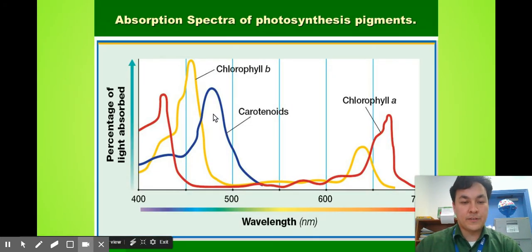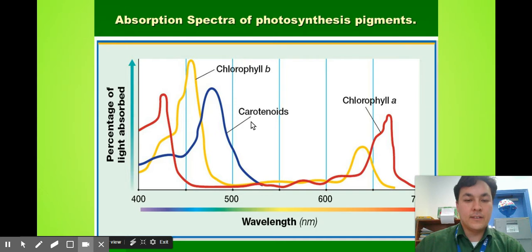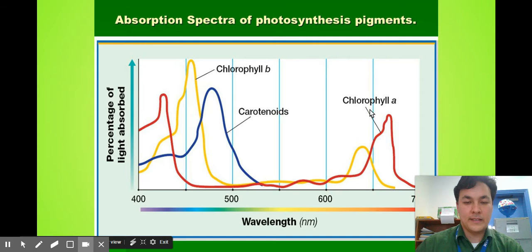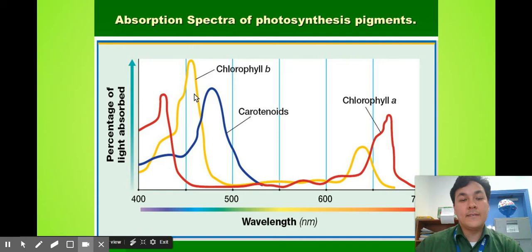Here's a little absorption spectra chart — these are the colors absorbed by plants. You can see there are two types of chlorophyll, and there are also carotenoids, which absorb colors as well. They come out in the fall in the forest so you can see the leaves changing color. You'll notice the green color isn't absorbed very much — it gets reflected, and that's why most plants look green. The wavelength of light affects the photosynthetic rate.